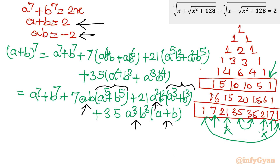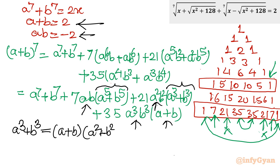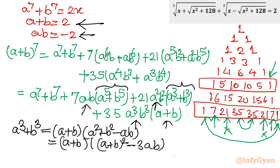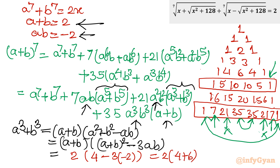Let us find A³ + B³ first. Using the formula: A³ + B³ = (A + B)(A² + B² − AB) = (A + B)((A+B)² − 3AB). Substituting: A + B = 2, so (A+B)² = 4; AB = minus 2, so minus 3 times minus 2 = plus 6. This gives 2 times (4 + 6) = 2 times 10 = 20. So A³ + B³ = 20.